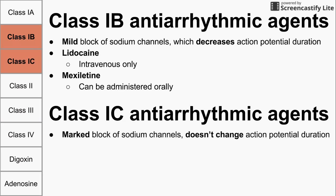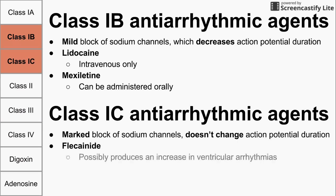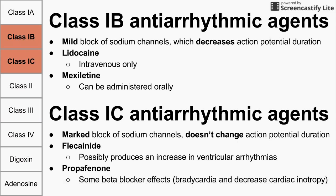Class 1C agents provide a marked block of sodium channels, and this actually doesn't change the action potential duration. The two class 1C drugs are flecainide, which produces an increase in ventricular arrhythmias, so it's not quite the best antiarrhythmic agent. Propafenone is a little better and has some beta blocker effects, such as bradycardia and decreasing cardiac inotropy.